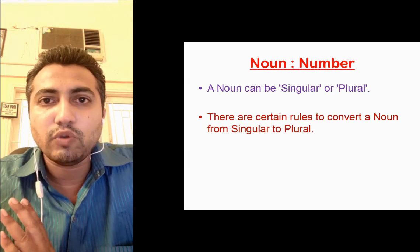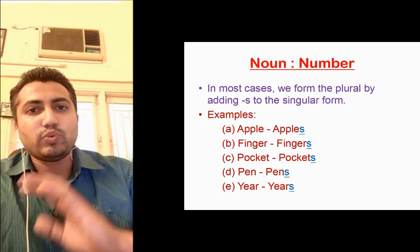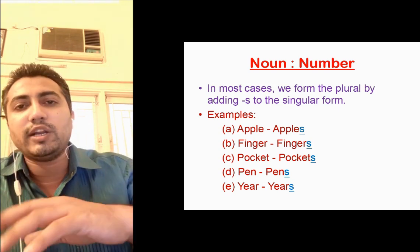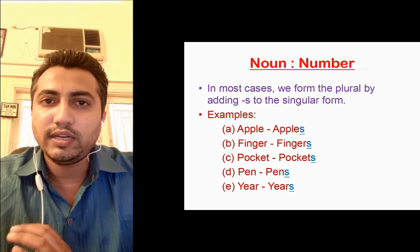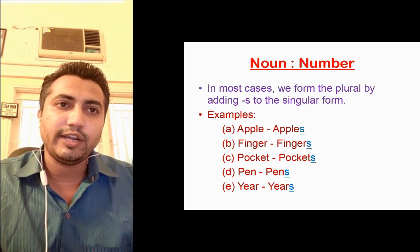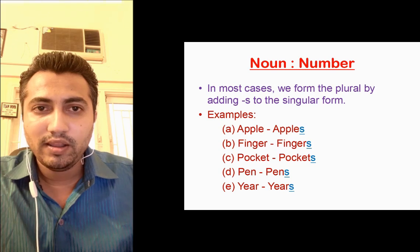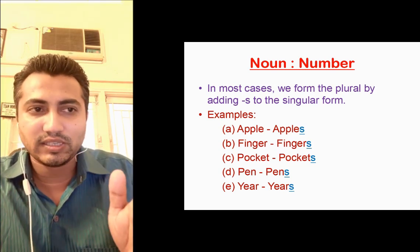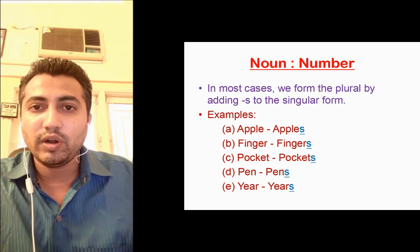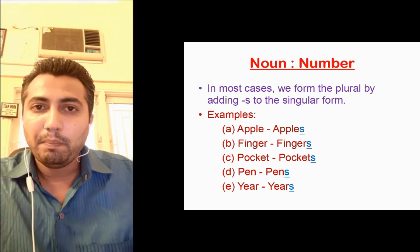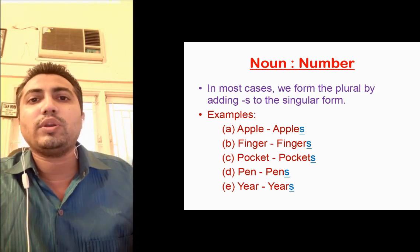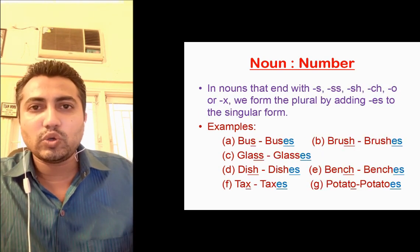There are different rules for different nouns. The first rule is that generally nouns are added with an 's' to convert them into plural. Most nouns are such that we simply add 's' to make them plural. For example: apple becomes apples, finger becomes fingers, pocket becomes pockets, pen becomes pens, ear becomes ears. By adding just an 's', the noun is converted to plural. Now let us go to the second rule.